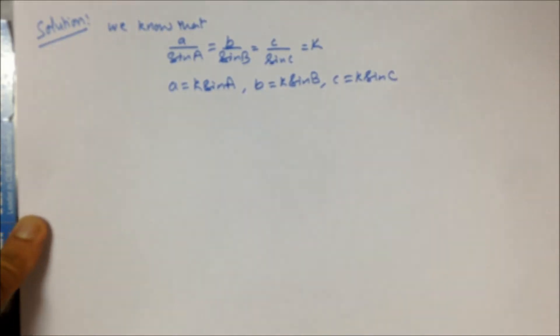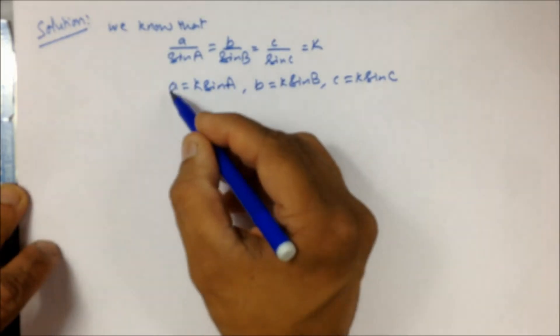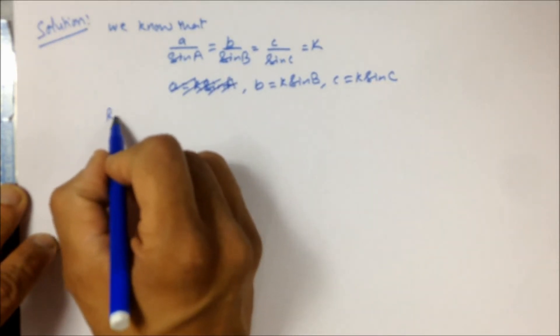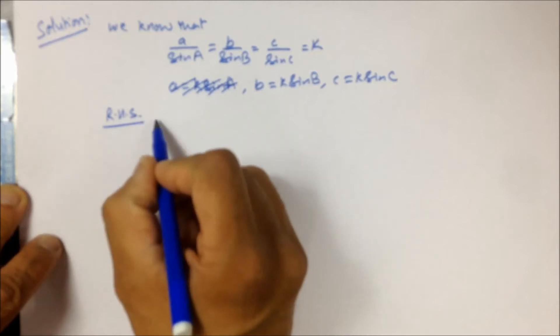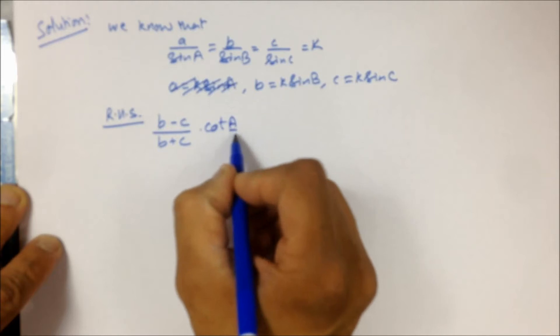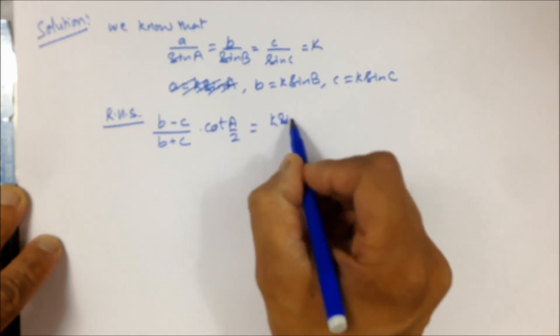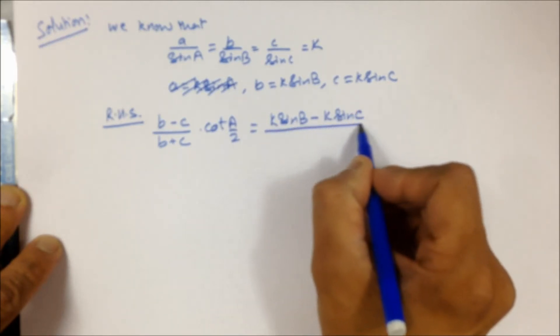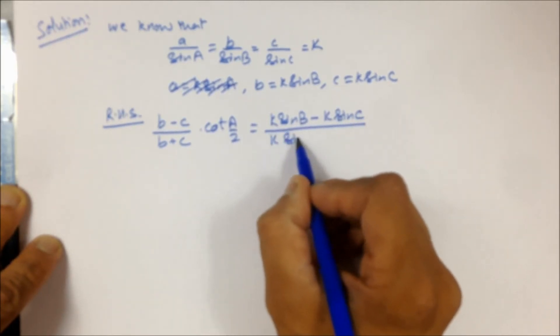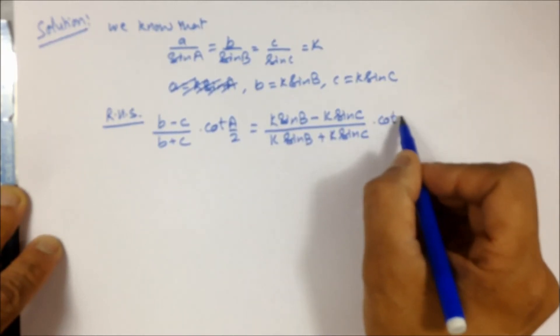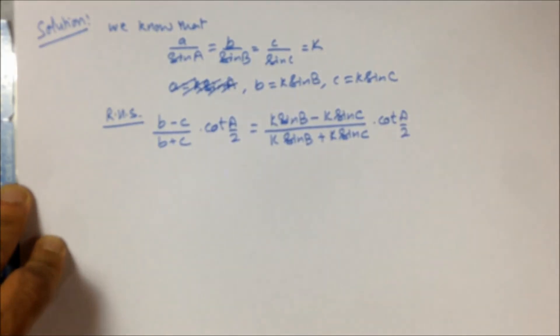Well, in this question we do not want side a, so you can skip that because we are only interested in b and c. I'm taking the right-hand side and putting the corresponding values. We'll take k common.